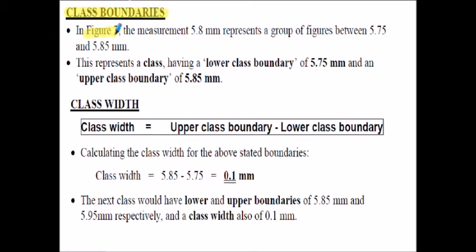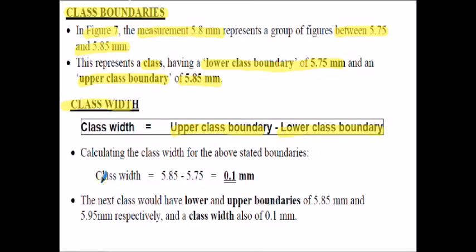Class boundaries - on figure seven, the measurement of 5.8, the original discrete bar from our tally chart, is now between the value of 5.75 millimeters and 5.85 millimeters. This is a class represented by the lower class boundary of 5.75 millimeters and the upper class boundary of 5.85 millimeters. Class width is defined as the upper class boundary take away the lower class boundary. So the class width of 5.85 take away 5.75 is 0.1 millimeters - the same for all classes. That's why frequency was plotted on the vertical axis instead of frequency density.